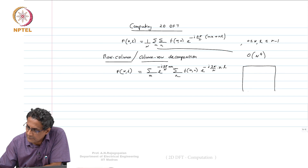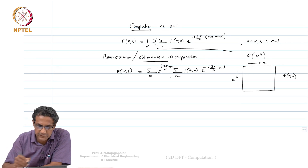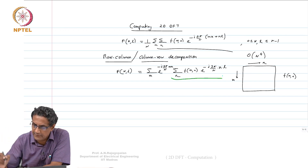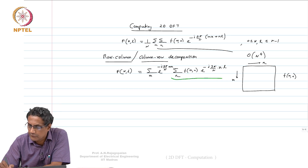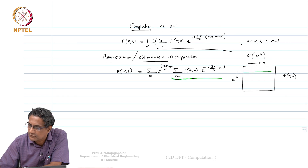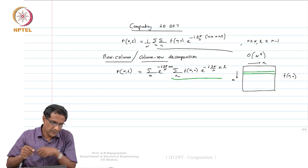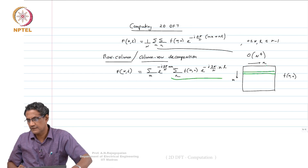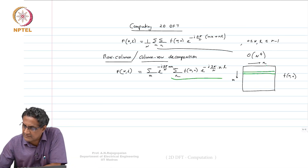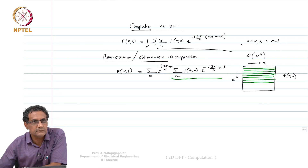If you look at F of M comma N — our notion of M and N — here is our image F of MN. If you examine this inner sum and freeze M for a certain M, and let the index run along N, then it looks like you are looking at the M-th row of this image. If you fix M and let the sum run over N, it looks like you are looking at a 1D row, which is like a 1D sequence.